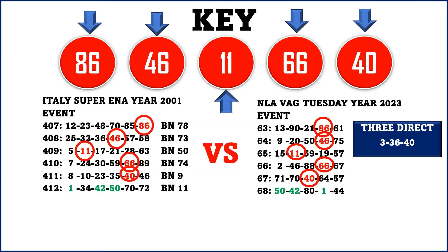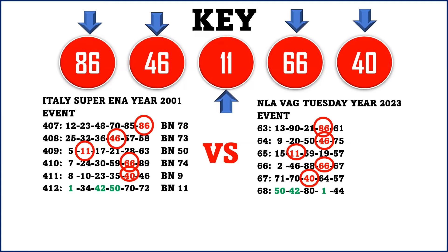The next three direct sequence number is 3, 36, 40. Remember that all three direct sets — including the one that already dropped — along with the permutation numbers, you still have to try your luck on all of them. But the second main targeted number is 3, 36, 40, played as three direct and three numbers presentation. For Super Enalotto results 413, the numbers 34, 16, 36, 74, and 89 dropped with BN 40. For the NLA results 69, we had 77, 83, 36, and 40. So 3, 36 dropped as two direct and 40 as bonus number, confirming the three direct set.